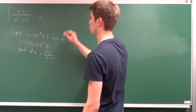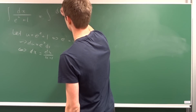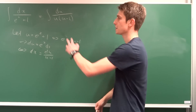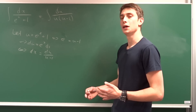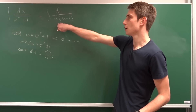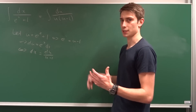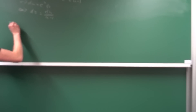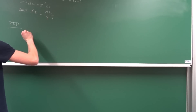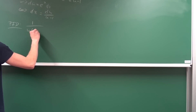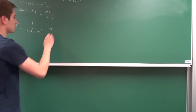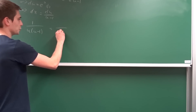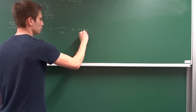Plugging all of this in, the integral becomes the integral of du over u times u minus 1. That's a fairly complex fraction, so we want to do partial fraction decomposition to split it into two simpler rational functions. We write 1 over u(u minus 1) as A over u plus B over u minus 1.